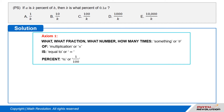Axiom 1. 'What,' 'what fraction,' 'what number,' 'how many times,' 'something,' or the symbol theta means multiplication. 'Of' means multiply. 'Is' means equal to. 'Percent' — its symbol is % or 1 over 100.